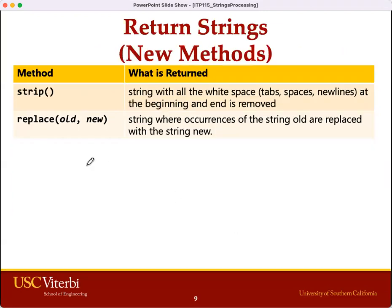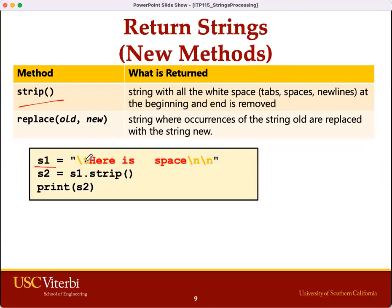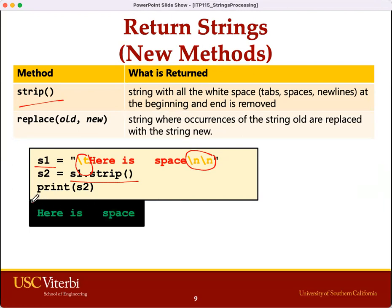Here are two new methods. strip will remove all the leading and trailing spaces. For example, we have S1 with a tab in front and a few newlines at the end. We convert S1 to S2 through the strip function, and S2 will now have both the leading and trailing spaces removed. Note that we didn't touch the white spaces in the middle — strip only removes the beginning and ending white spaces, and doesn't affect white spaces in the middle.